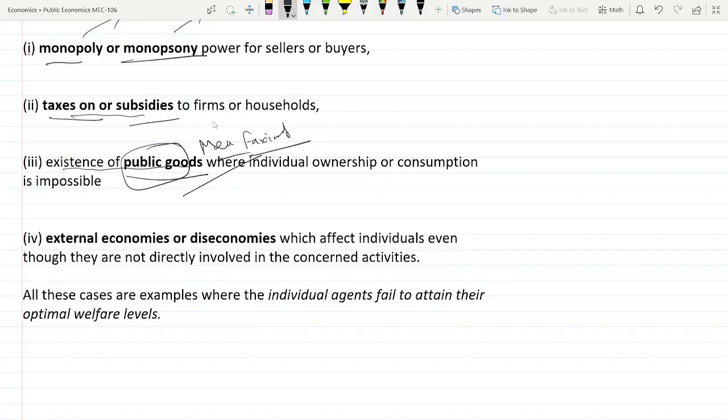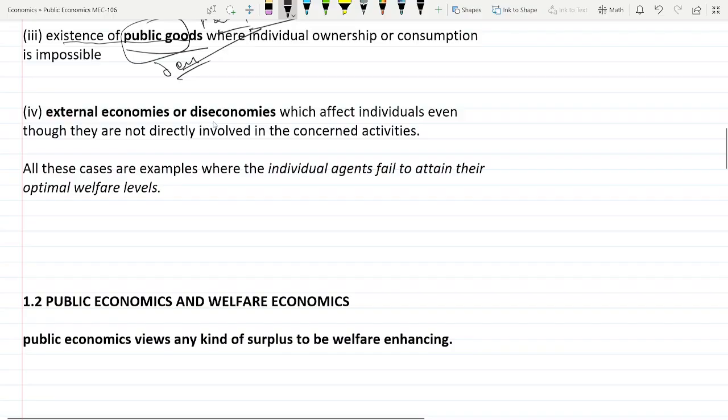So if there is public goods there will be government, like if there is defense or any kind of public good government must be there. We will see why private market fails to achieve optimal level in the coming chapter. So then there are the externality factors.